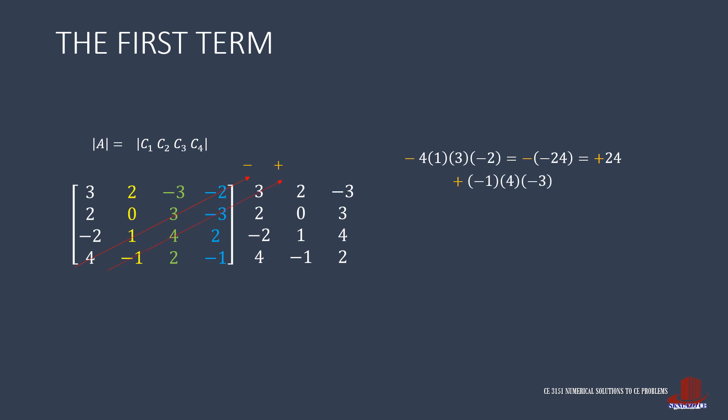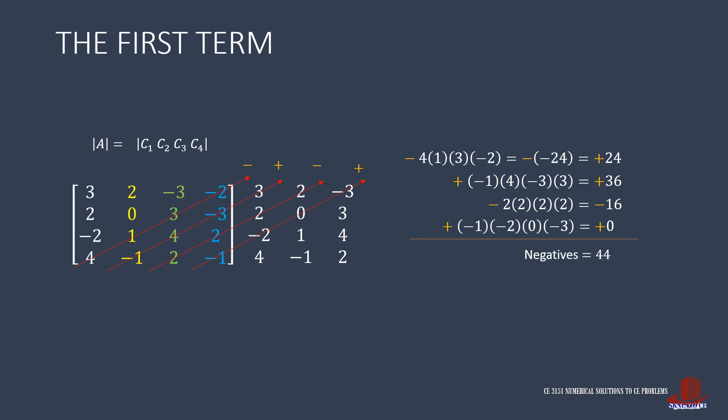The second anti-diagonal has negative 1, times 4, times negative 3, and positive 3, preceded by a positive sign, giving positive 36. The third anti-diagonal has all 2's for elements with a preceding negative, producing negative 16. The last anti-diagonal has negative 1, times negative 2, with 0 and negative 3, resulting in 0. Adding all the negatives comes up with positive 44.